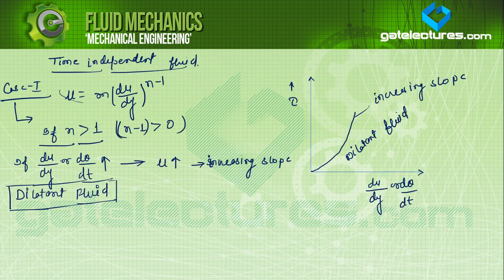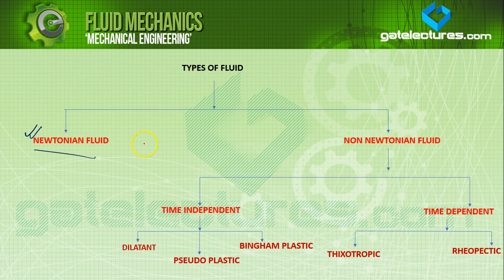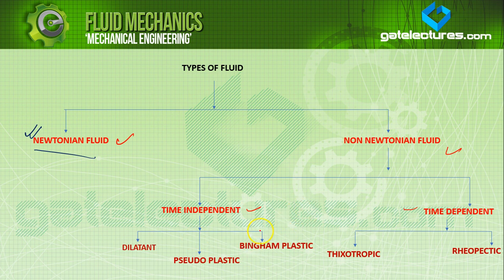This is the complete analysis of types of fluid. Review: there are two types of fluids — Newtonian and non-Newtonian. Non-Newtonian is divided into time independent and time dependent. Time independent: dilatant (increasing slope curve), pseudoplastic (decreasing slope), and Bingham plastic (constant slope but violates law of fluid flow, so not considered a fluid). Time dependent: thixotropic (viscosity decreases with time) and rheopathic (viscosity increases with time). Thank you.